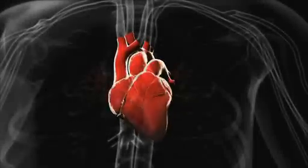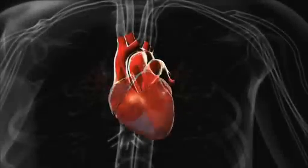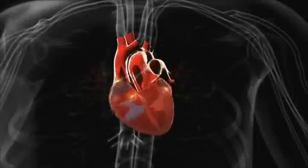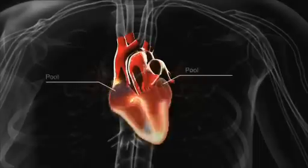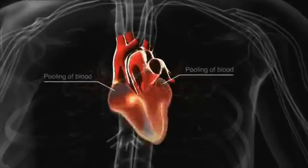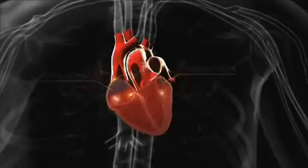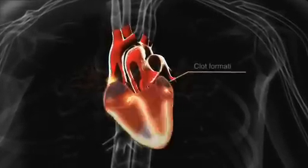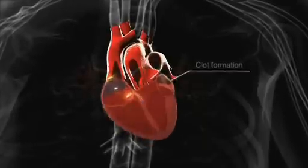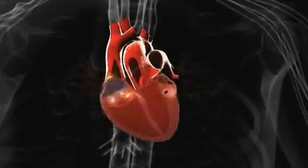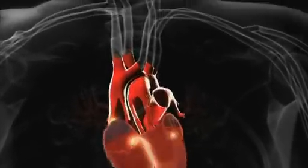During atrial fibrillation, because the atria do not contract regularly, blood does not empty efficiently into the ventricles and begins to pool in the atria, especially in the atrial appendages. This pooling of blood can cause clots to form, which, if dislodged, can travel in the bloodstream towards the brain.